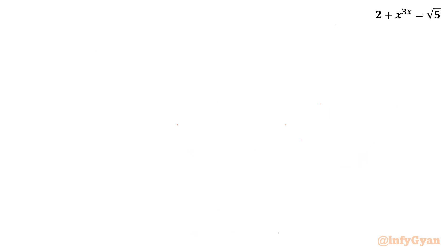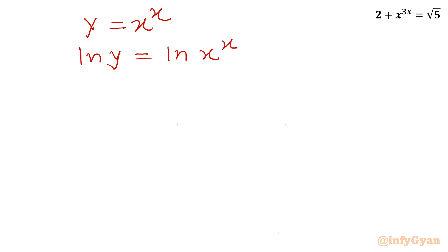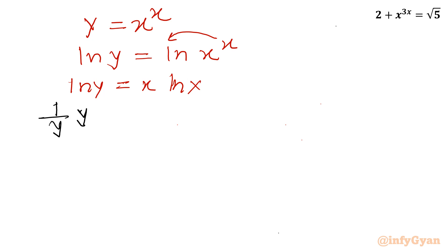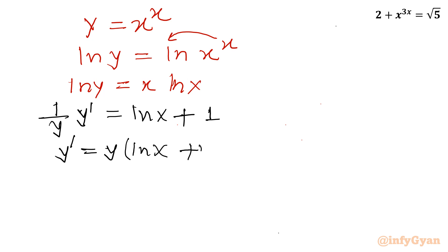Let us analyze the function y = x^x. Taking ln of both sides: ln y = x ln x. Taking the derivative with respect to x using the product rule: (1/y)·y' = ln x + 1. So y' = y·(ln x + 1), which gives y' = x^x·(1 + ln x).